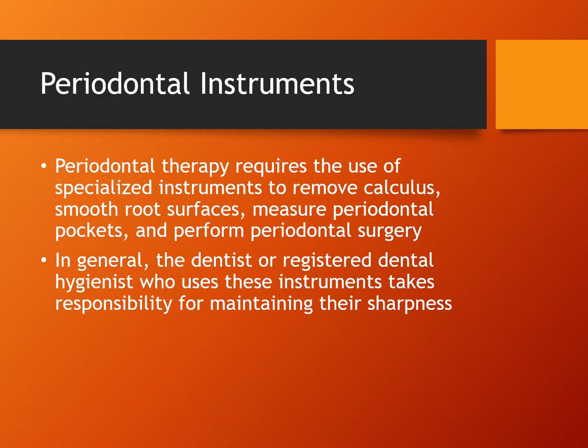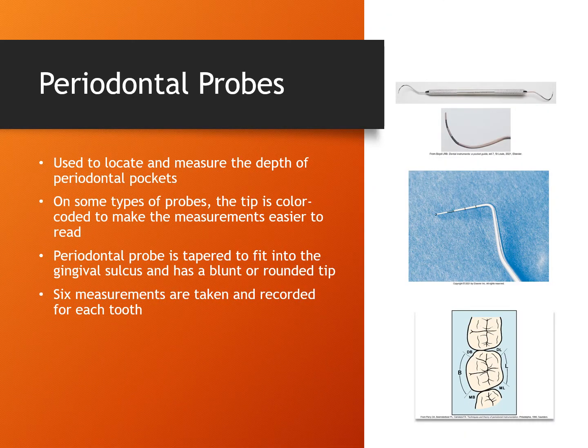There are many specialized instruments used by the periodontist and dental hygienist to remove calculus and smooth root surfaces, measure periodontal pockets, and perform periodontal surgery. In Texas, only the dentist and registered dental hygienist can remove calculus. Periodontal probes may be metal or plastic and are used to locate and measure the depth of periodontal pockets. They are tapered to fit into the sulcus with a rounded or flat tip. Measurements are calculated in millimeters, and six measurements are taken around the tooth: the buccal, distobuccal, distolingual, lingual, mesiobuccal, and mesiolingual.